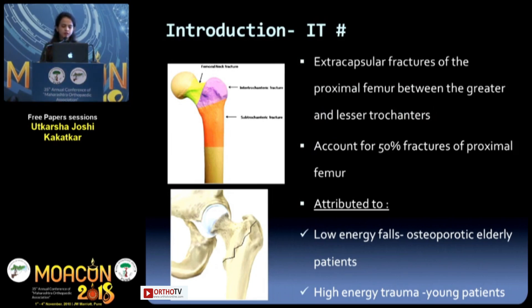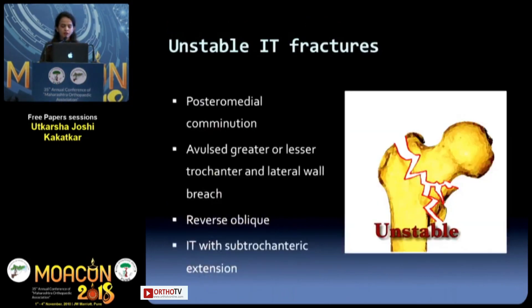They are attributed to low energy falls in elderly patients and high energy trauma in young patients. Among them, the unstable IT fractures are those with posterior medial comminution, avulsed greater or lesser trochanters and lateral wall breach, the reverse oblique fractures, and IT fractures with sub-trochanteric extensions.